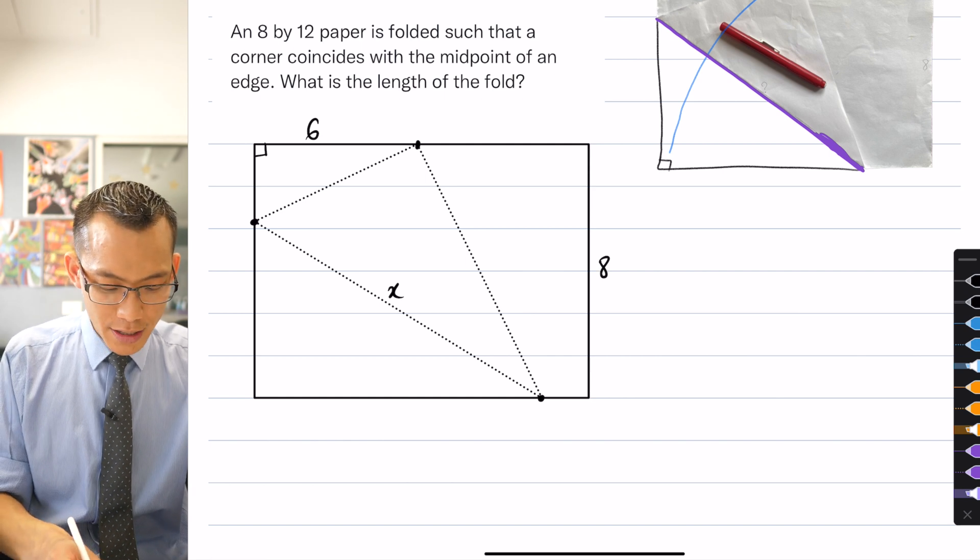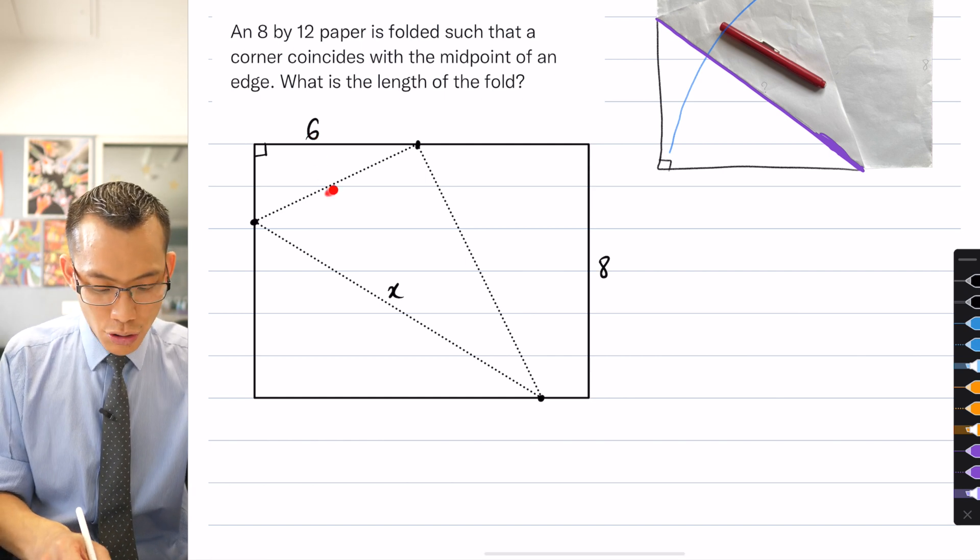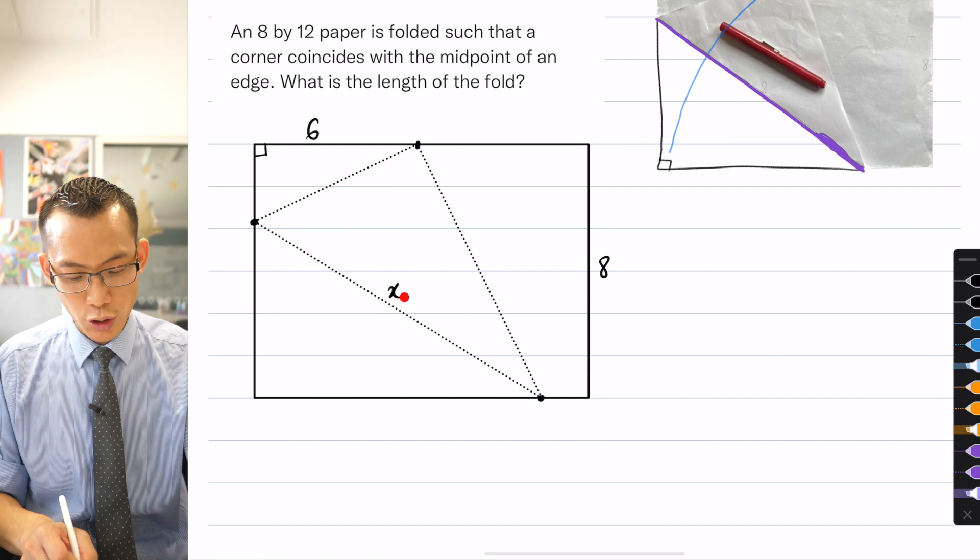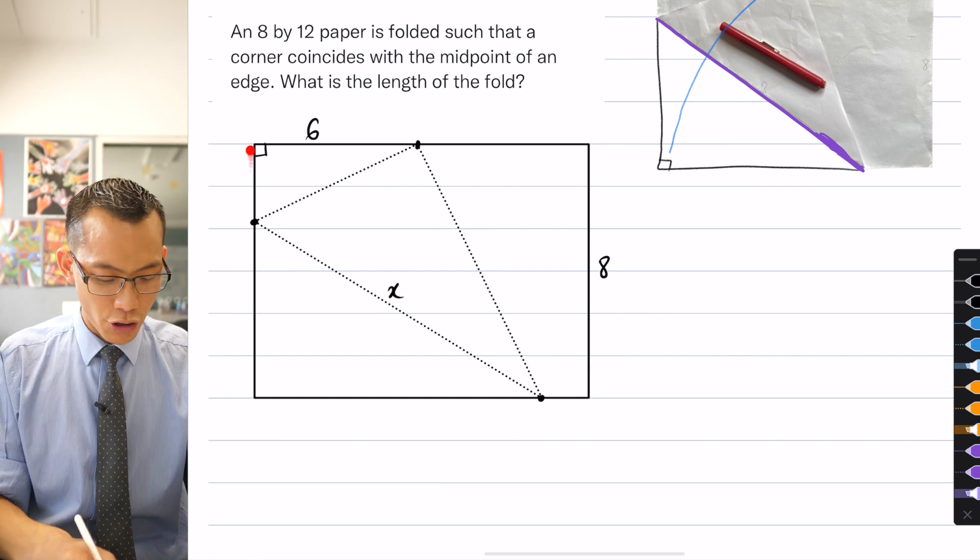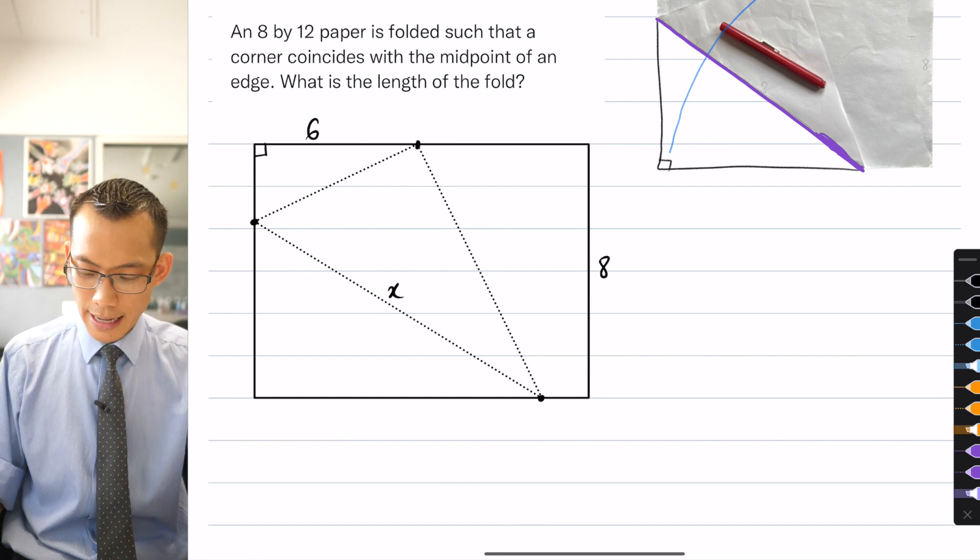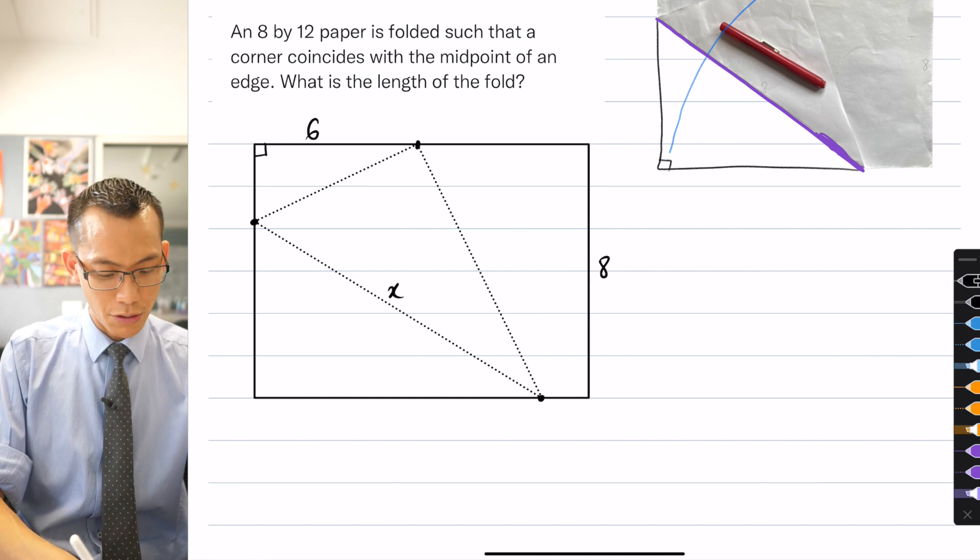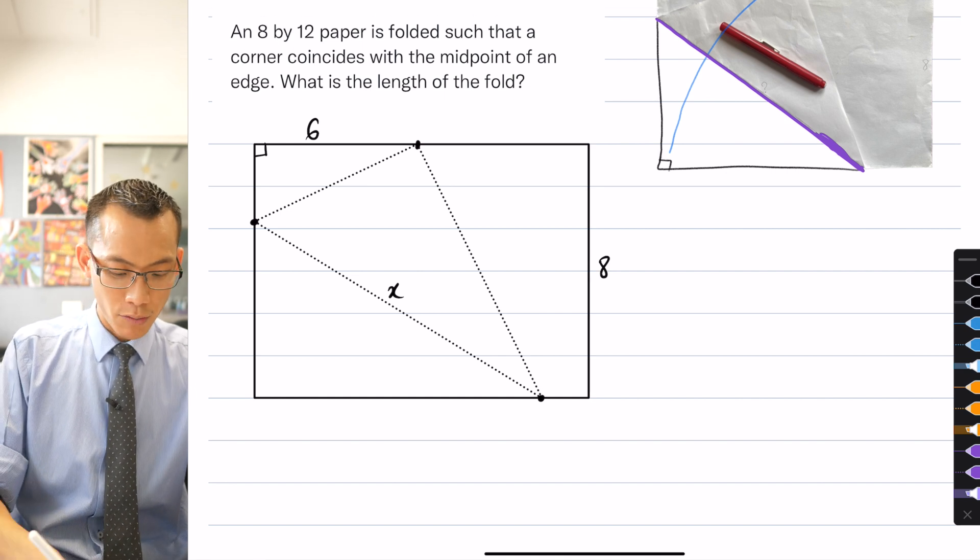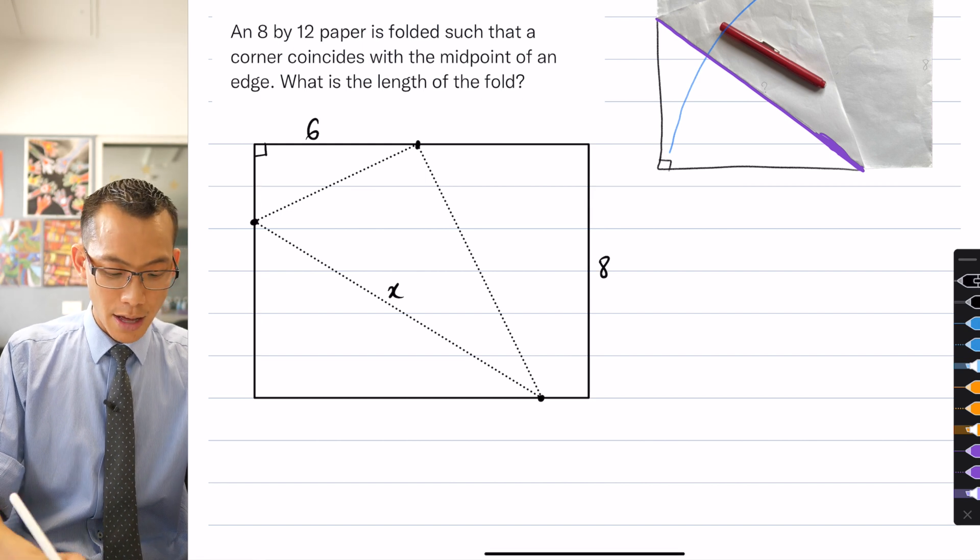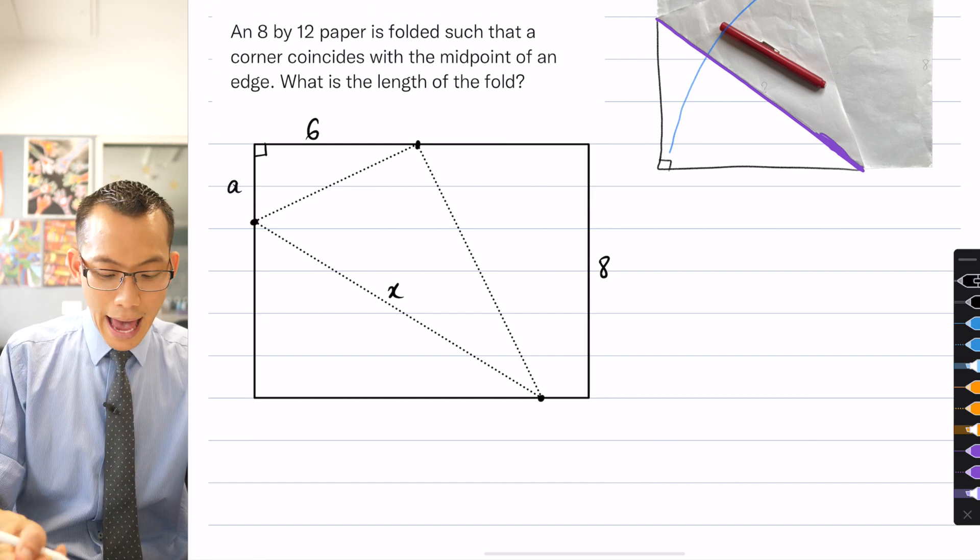However, even though it's sort of promising to be able to get from this 6 into this hypotenuse to then get toward the x, I don't know this other length over here. So I guess I could say, well, maybe we call this, I don't know what's happening with the proportions of this fold up here. Because it's another unknown, I guess maybe I'll call this a.